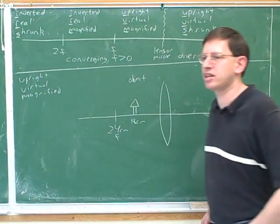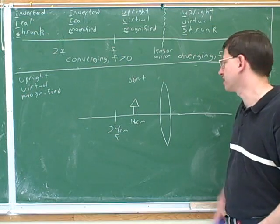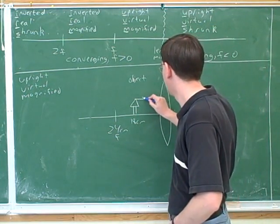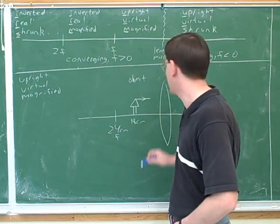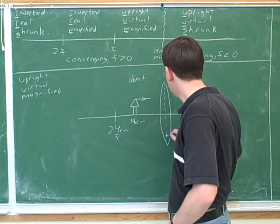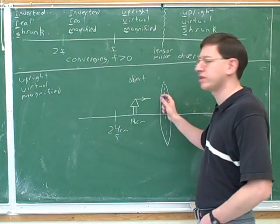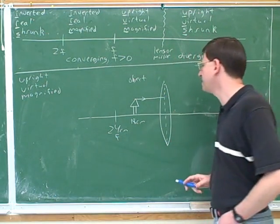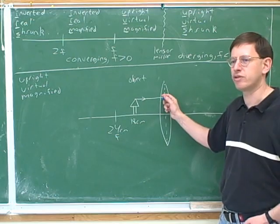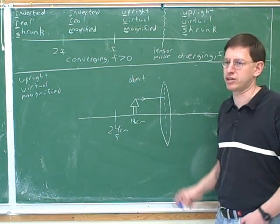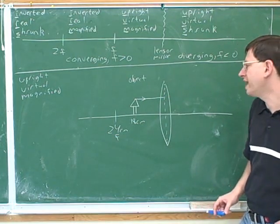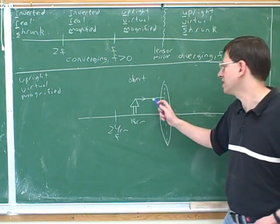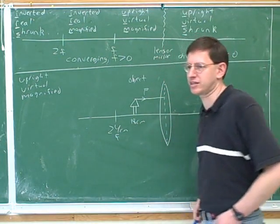So here's our incoming light. By the way, for a lens it helps to draw a center line through the lens, and we imagine that all of the bending happens at the center line. That's not realistic, but it's useful for drawing pictures — imagine that all of the bending of the ray happens at the center of the lens. So here's the incoming P ray, parallel to the axis.